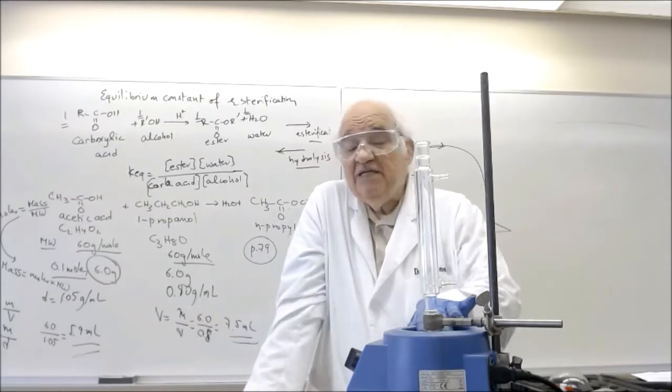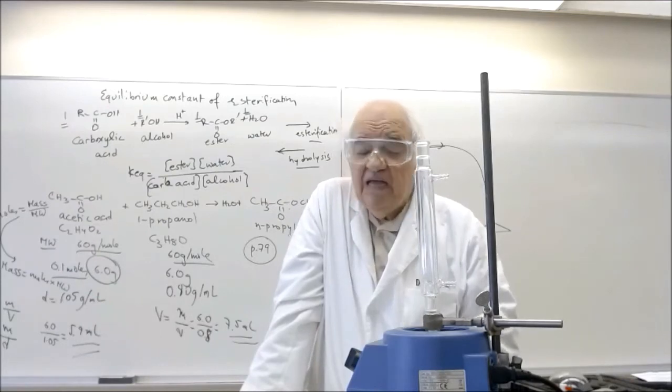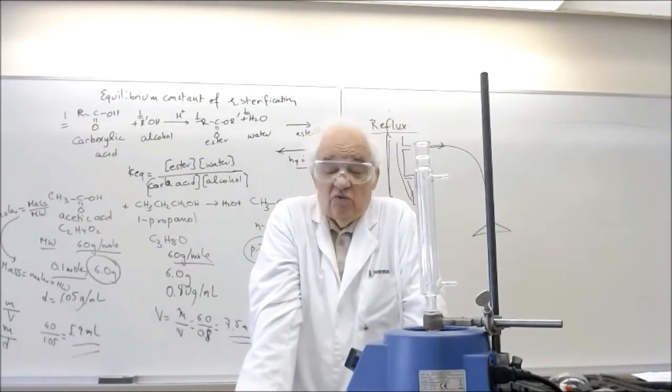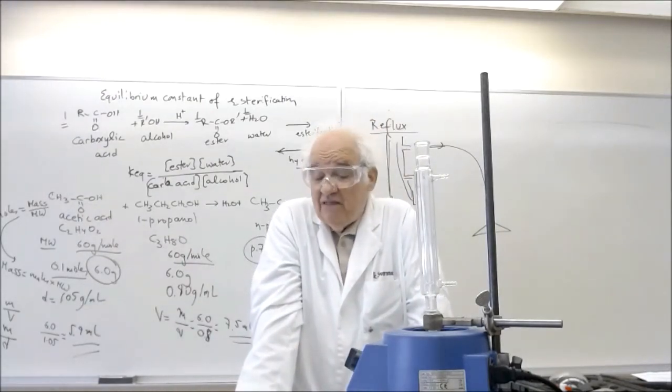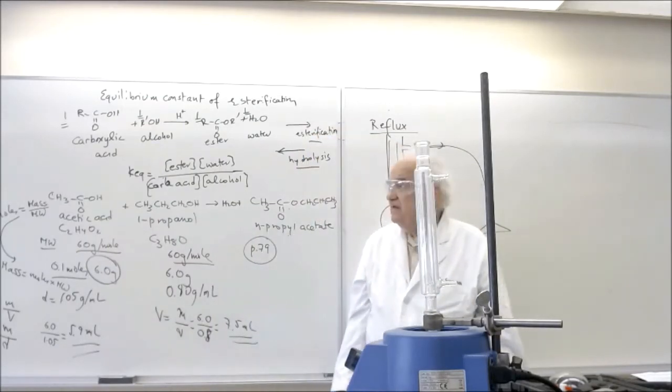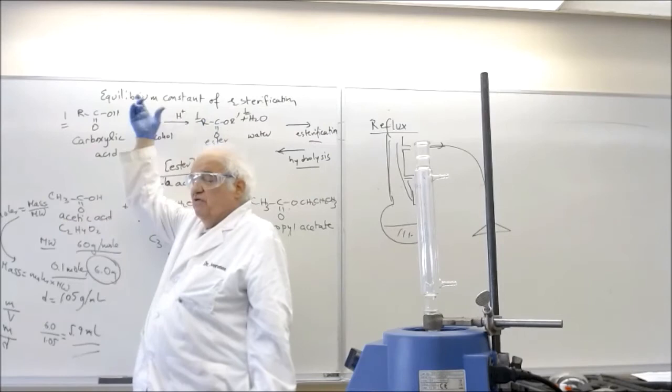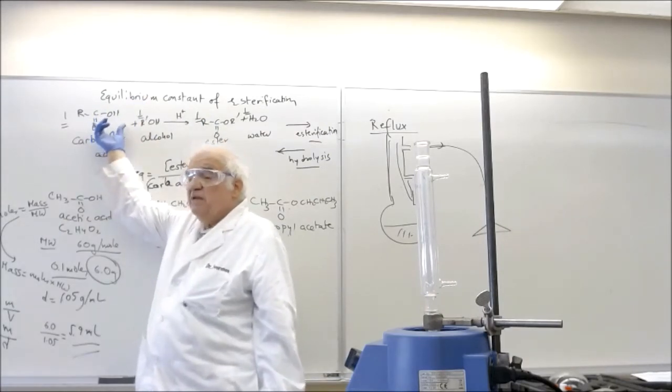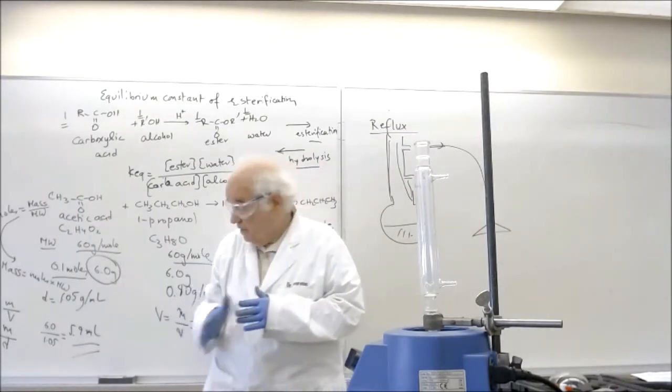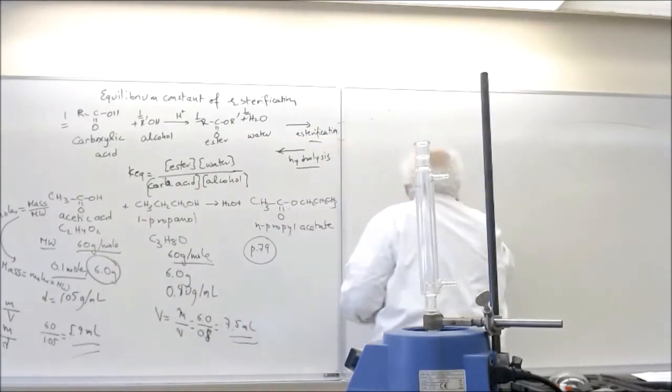So you will mix these two reagents here for about, and we'll start heating for about anywhere, usually 30 minutes is adequate. I ask the students to do it anywhere from 30 minutes to 1 hour. But before we do that, we have to find out how much is the acid here. Remember, the relative ratio is 1 and 1 gives you 1 and 1. So if I find out how much acid I have, I know how many moles of acid I have, which is equivalent to the number of moles of the alcohol.